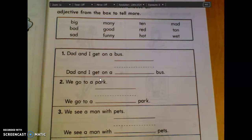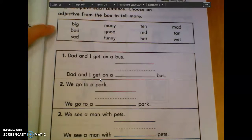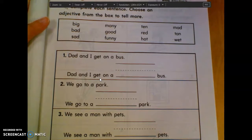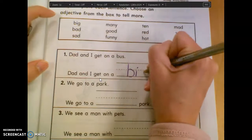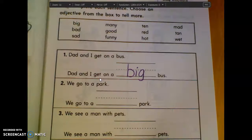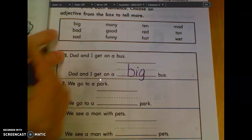So number one. Dad and I get on a bus. Dad and I get on a blank bus. What word from up here could we fill in that sentence with? Claire? Big. Big. Good. Dad and I get on a big bus. Big. Yes, Tommy? What? Okay. Then throw the box away and just get a bag over there. Okay? I'll do it quickly because we're moving on. Yes, Isabel? Yes, you can. Yes, you can cross out big.